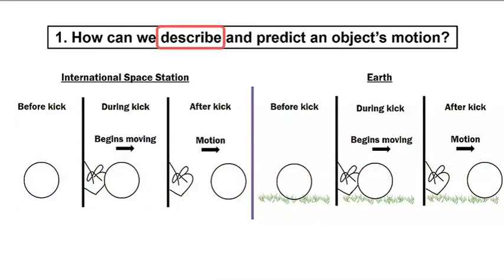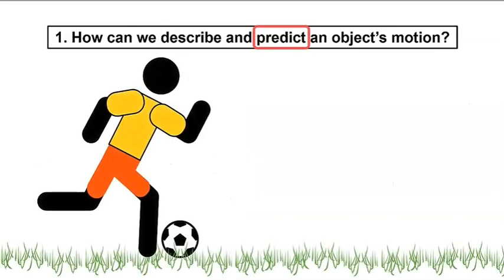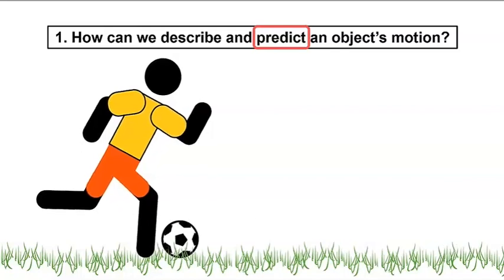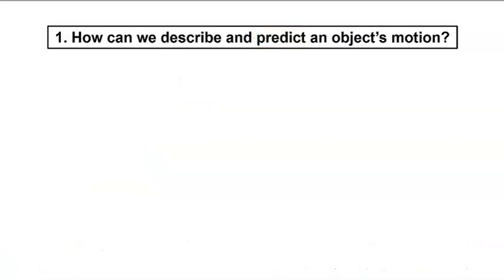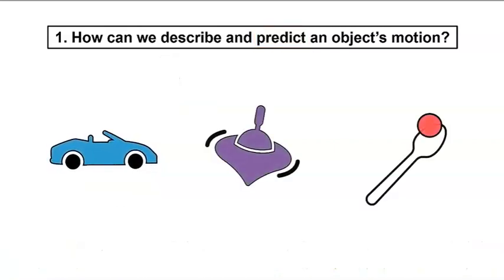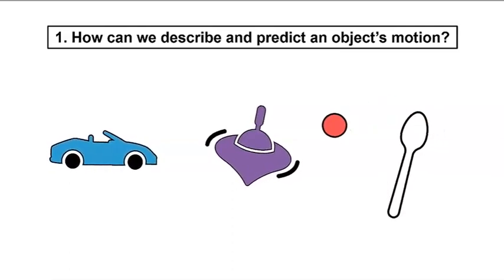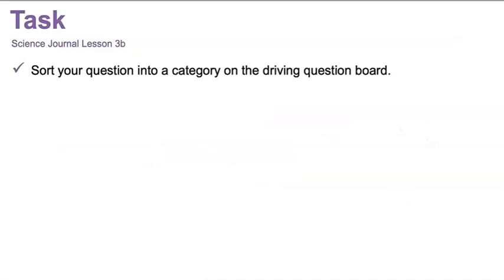But what would we need to do to be able to predict the motion of a soccer ball? I think we would need to make more observations. Maybe we could practice kicking a soccer ball hard and then soft. If we measured where the soccer ball landed, then maybe we could predict where the soccer ball would land the next time. In our next lesson, we'll explore the motion of a variety of different objects. I can't wait to continue investigating. Let's review your task for today: sort your question into a category on the driving question board.